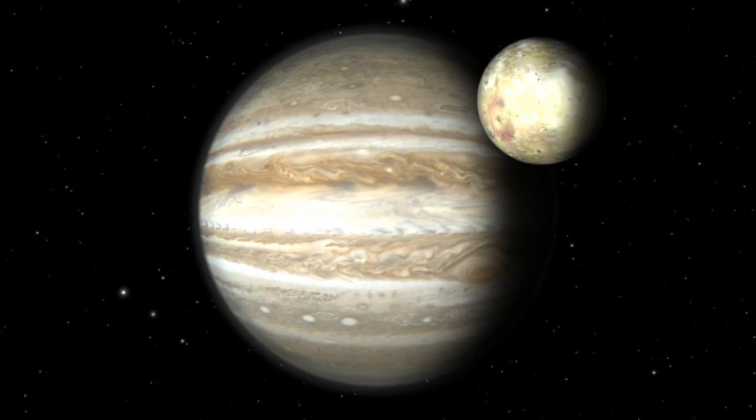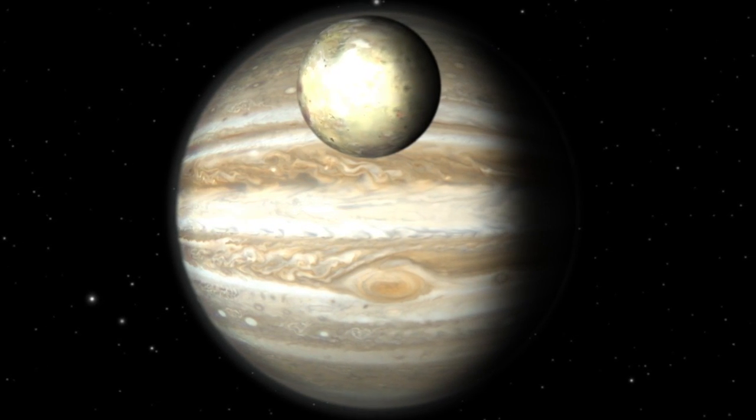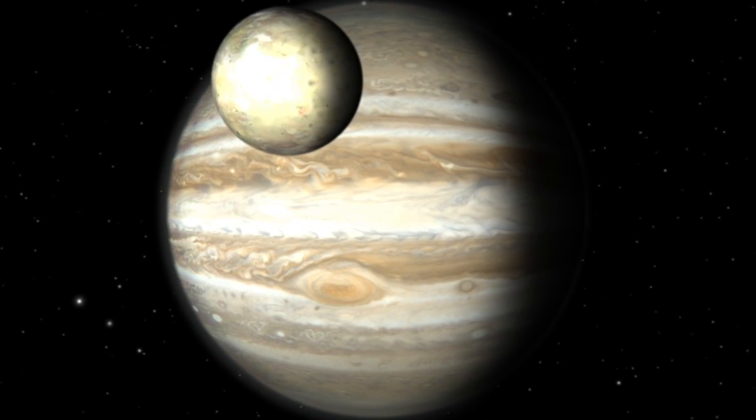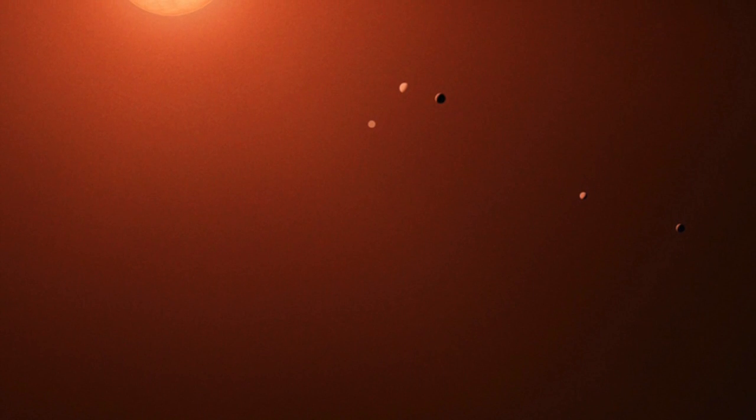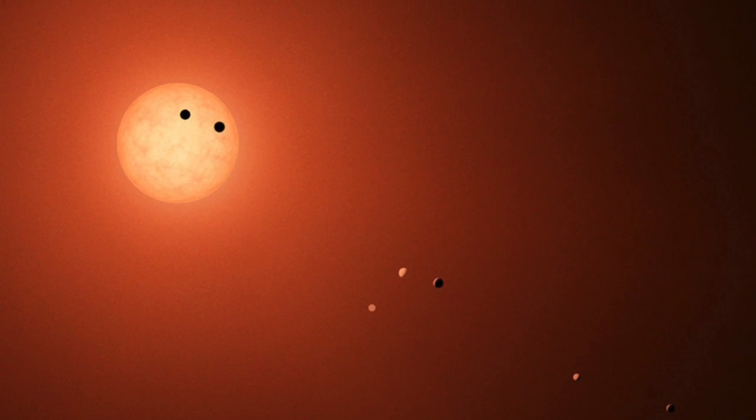But not HD 139139. HD 139139's light curve shows numerous dips, and all of these dips look just like normal planets in transit. The problem is, they aren't anything close to periodic. In fact, the dips appear completely random.